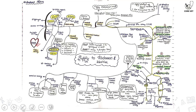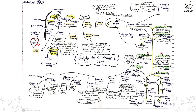When it comes to the abdomen, it will give several branches. The very first one is the phrenic artery, which supplies the diaphragm.